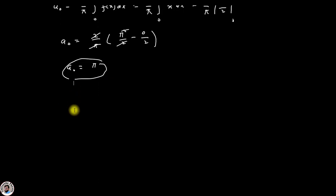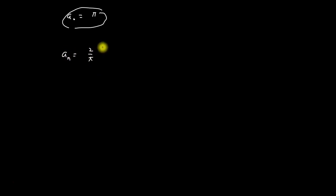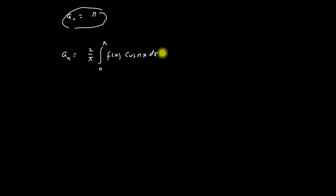Now we have to find the value of aₙ. We know that the equation for aₙ is: aₙ = (2/π) × integration from 0 to π of f(x) cos(nx) dx. Putting the value of f(x), we get: aₙ = (2/π) × integration from 0 to π of x cos(nx) dx.